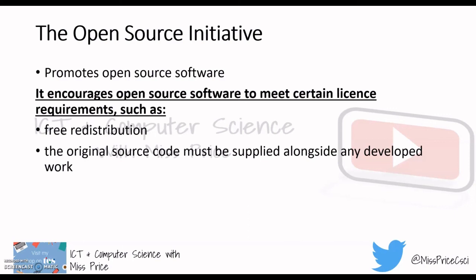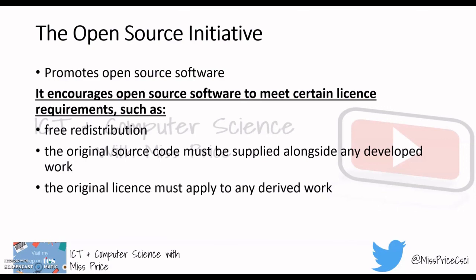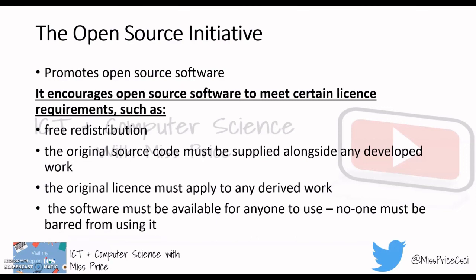The original source code must be supplied alongside any developed work, and the original license must apply to any derived work. The software must be available for anyone to use and no one must be barred from using it. The Open Source Initiative aims to keep it that way, so it is not commercialized in any way.